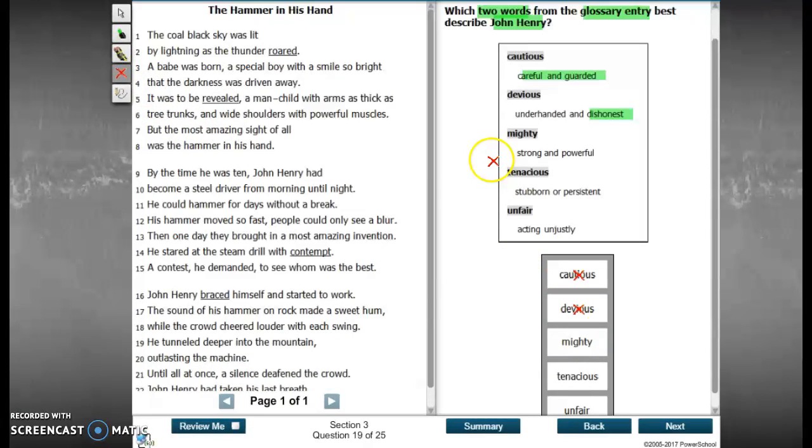Next choice. Mighty. Strong and powerful. Do you see anything that says he is strong and powerful? Well, if you look, line 5 and 6, it was to be revealed that a man child with arms as thick as tree trunks and wide shoulders with powerful muscles. It says he is powerful.